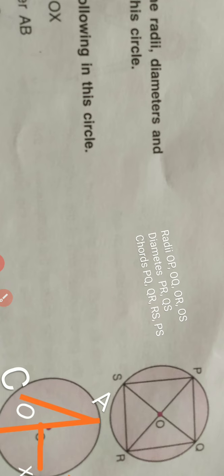Look in the figure, radii. Center is O. And on the circle perimeter, points are P, Q, R, S. So, OP, OQ, OR, OS are the radii.